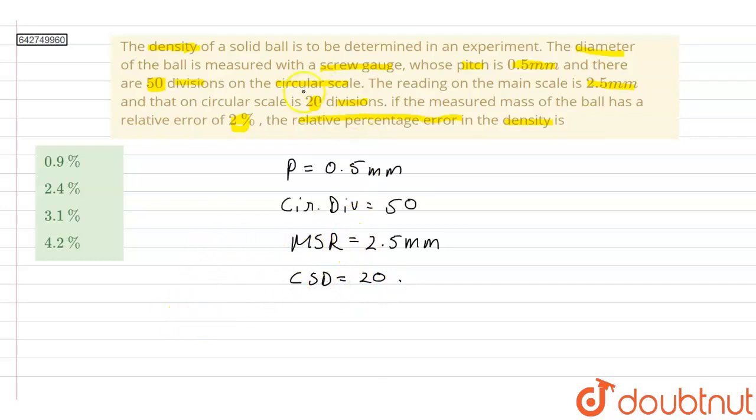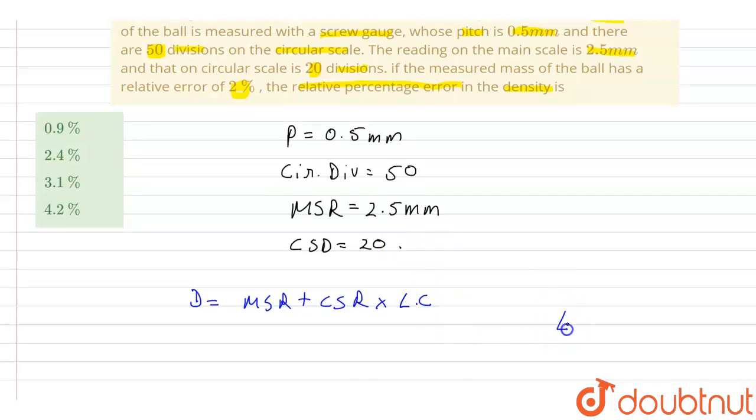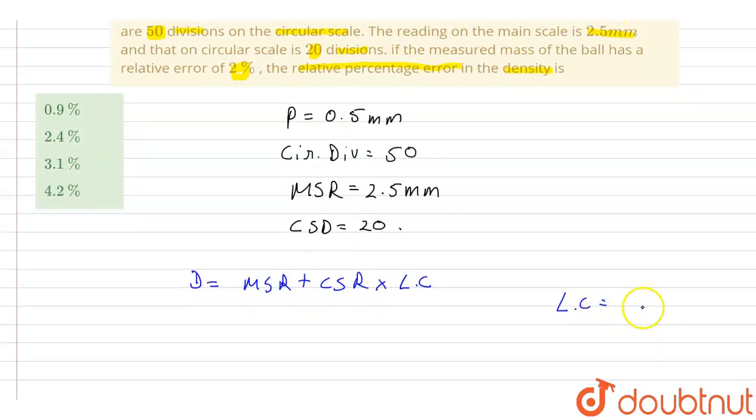So from these readings we can calculate the diameter of the screw gauge. That will be equal to MSR plus CSR multiplied by least count. And also we know that least count is given as pitch upon circular divisions.